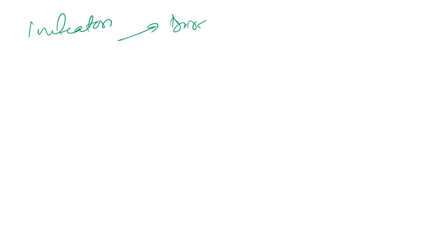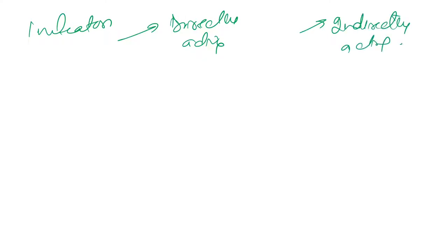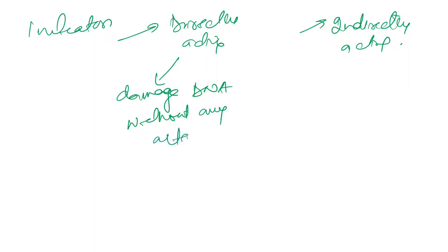Now we will study about the different types of initiators. Initiators can be directly acting and indirectly acting. Directly acting agents damage DNA without any alterations. They are mutagens causing cancer by direct damage or modification of DNA.